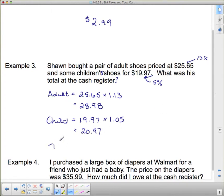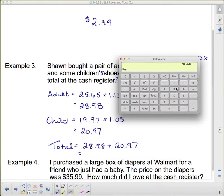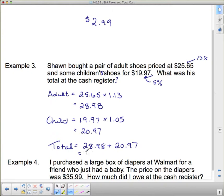So our total is going to be the adult shoes, the $28.98, plus the $20.97 for a total purchase price of... We've got $20.97 plus $28.98. So $49.95. Therefore, it costs $49.95 for both pairs.